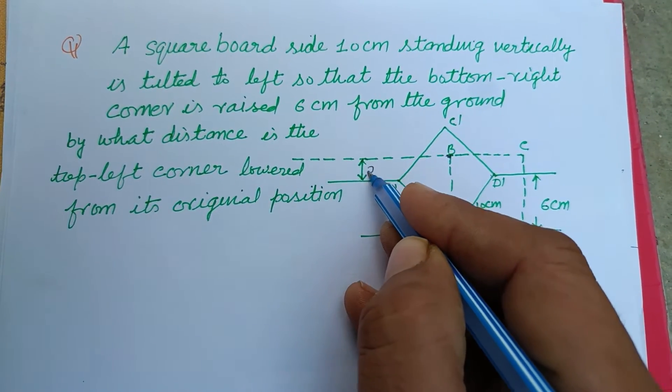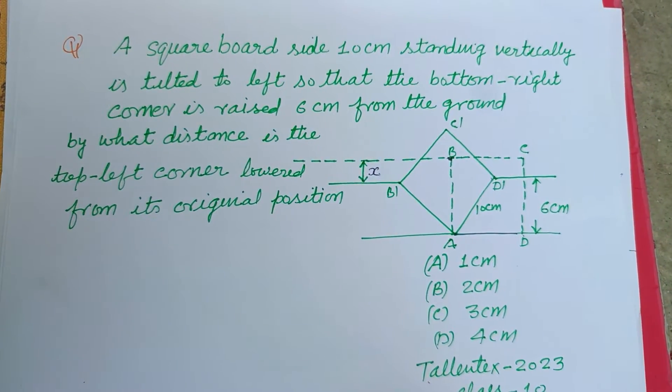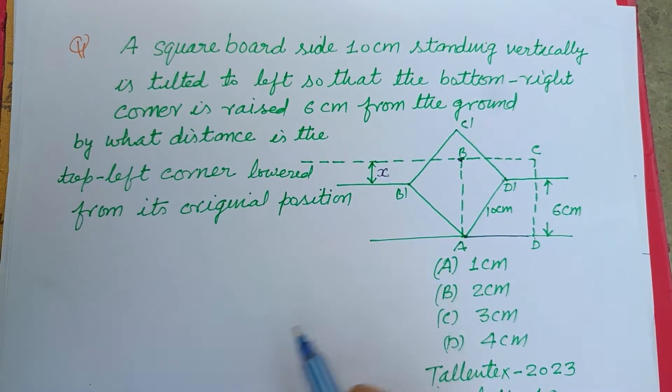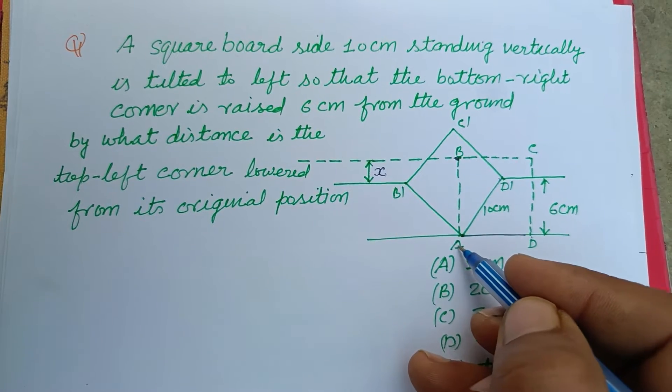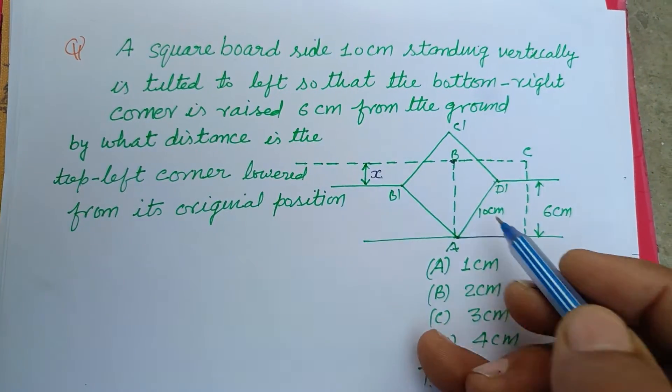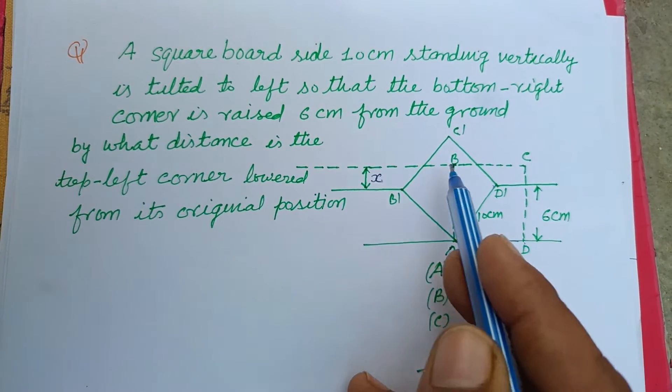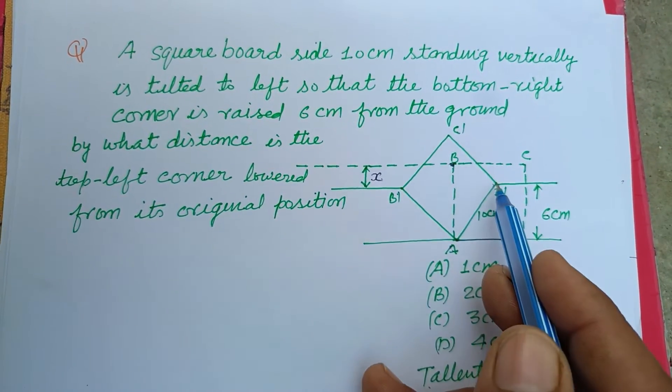How much is lowered? So this is X. We want to find out X here. The original square is ABCD. When it is tilted, its condition is A, B-dash, C-dash, D-dash in this condition. So this is 6.